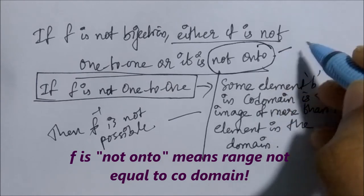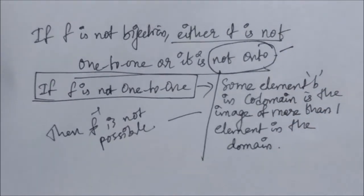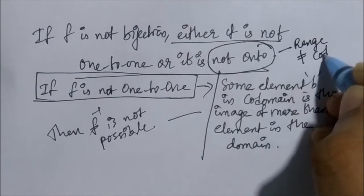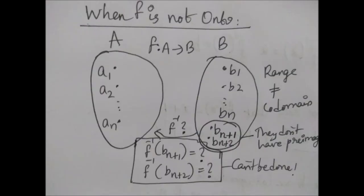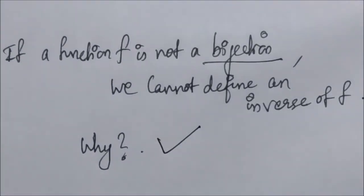Similarly, when f is not onto, the range of f is not the same as set B, meaning some elements in B don't have a pre-image. When we try to define f inverse from B to A, we can't assign an element for those elements in B — if we can't assign an element, we can't define a function. That's why when f is not a bijection, f inverse cannot be defined.